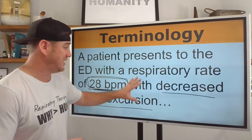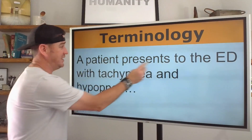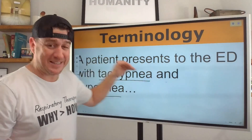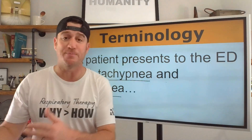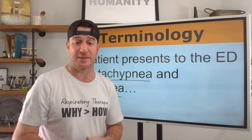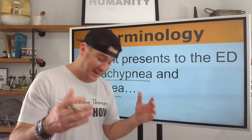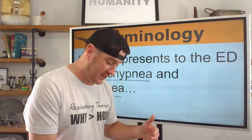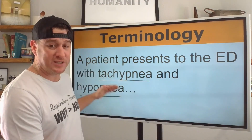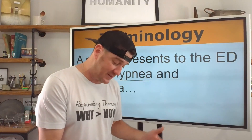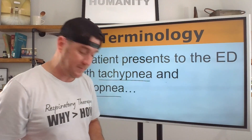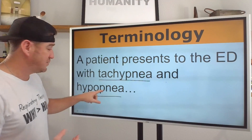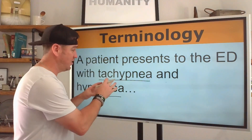Tachypnea is defined as a respiratory rate greater than 20 breaths per minute and has multiple sources. What could be causing this patient to present like this? It could be exertion, fever, hypoxemia, hypercarbia, metabolic acidosis, pulmonary edema, lung fibrosis, anxiety, or pain. But we have a patient who is breathing faster than 20 breaths per minute with very small tidal volumes. We have to be the expert to know that's what that means.